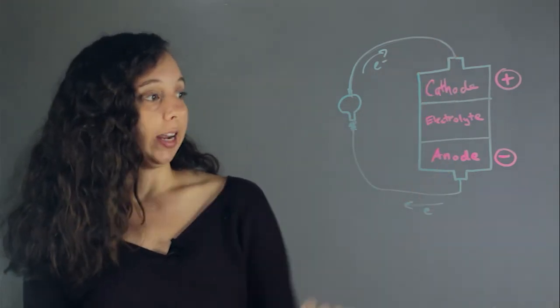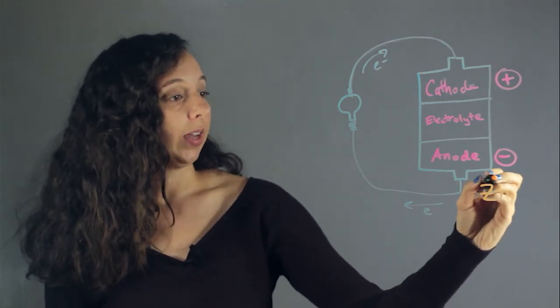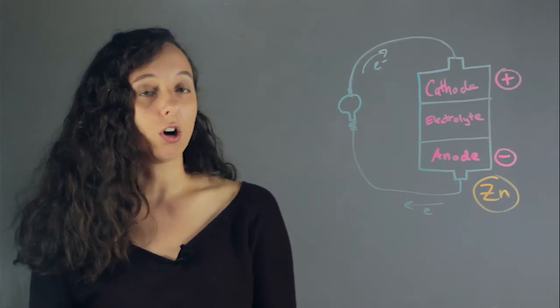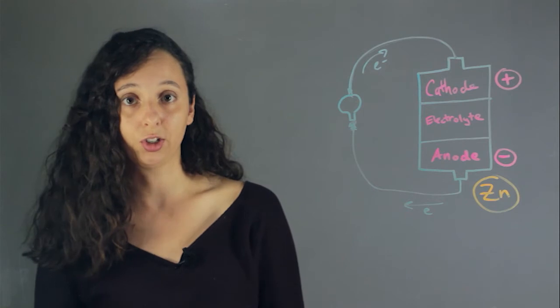A typical anode could be made of zinc. Zinc is a great anode because it always wants to become positive, which means that in turn it's going to have extra electrons that it's shed.